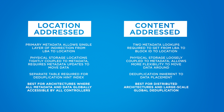The second option, content addressing, requires two metadata lookups — going from the LBA to the block ID, and then from the block ID to the physical location on disk. The physical storage is very loosely coupled to the metadata, which allows much more flexibility and gives us the ability to move data around easily. Deduplication is an inherent part of the data placement process in this solution. It's really best for distributed architectures and for places where large-scale global deduplication pools need to be managed across a cluster of storage.